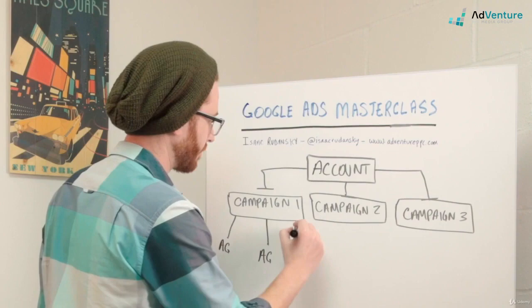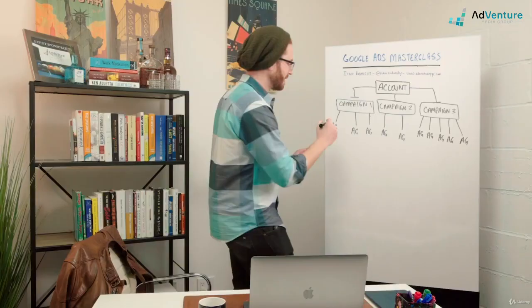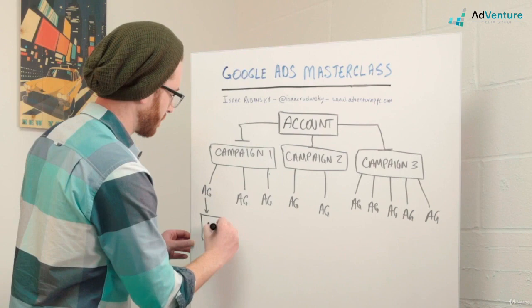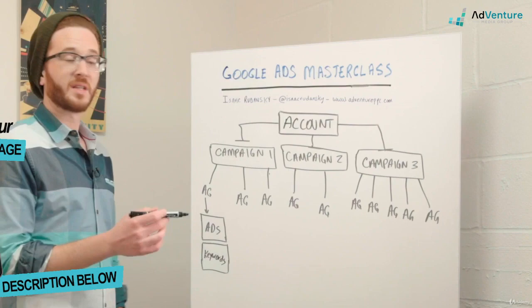Inside each ad group are two things that operate on the same level of the hierarchy. You have ads and you have keywords. Ads and keywords are both contained inside every ad group. You need to have both ads and keywords in every single ad group in order for that ad group to function.